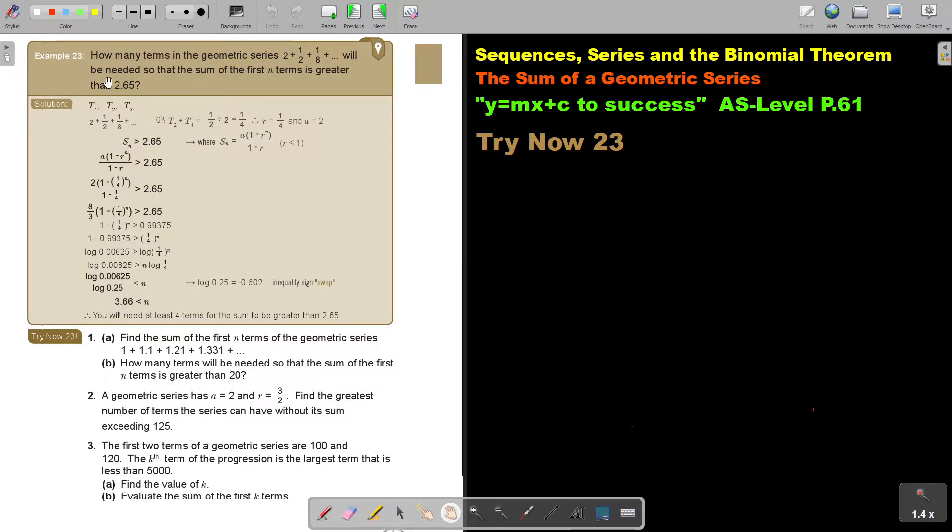Let's look at another example. How many terms in the geometric series will be needed so that the sum of the first N terms is greater than 2.65? Now they say it's a GP. So if I find out, I'm just going to say T2 divided by T1 and it's a quarter. So the value of R is a quarter. The value of A is 2.